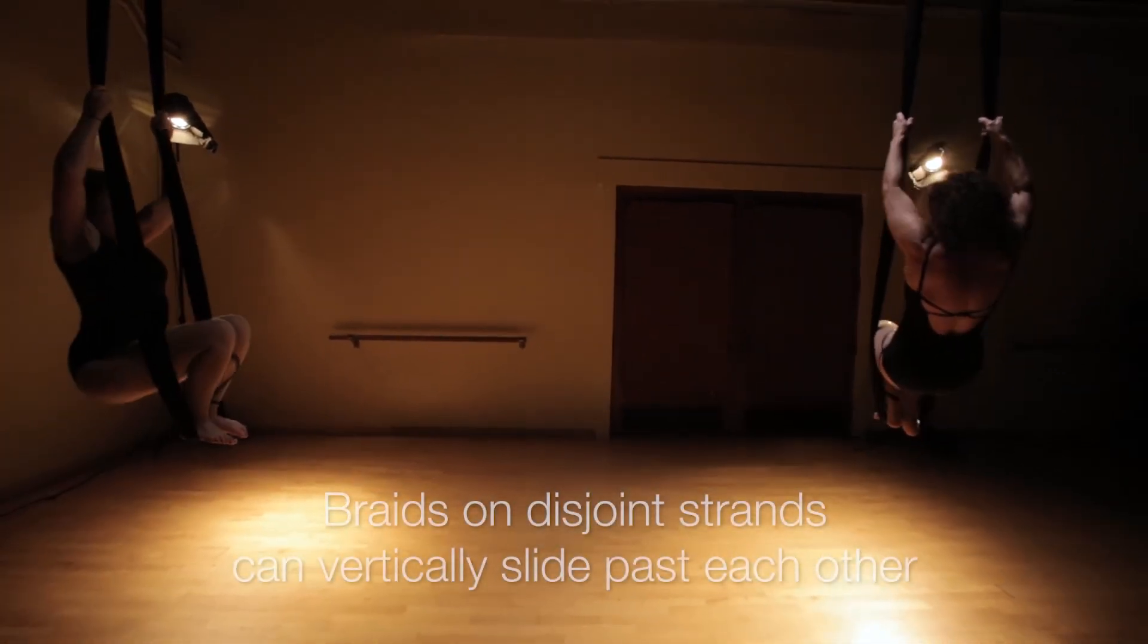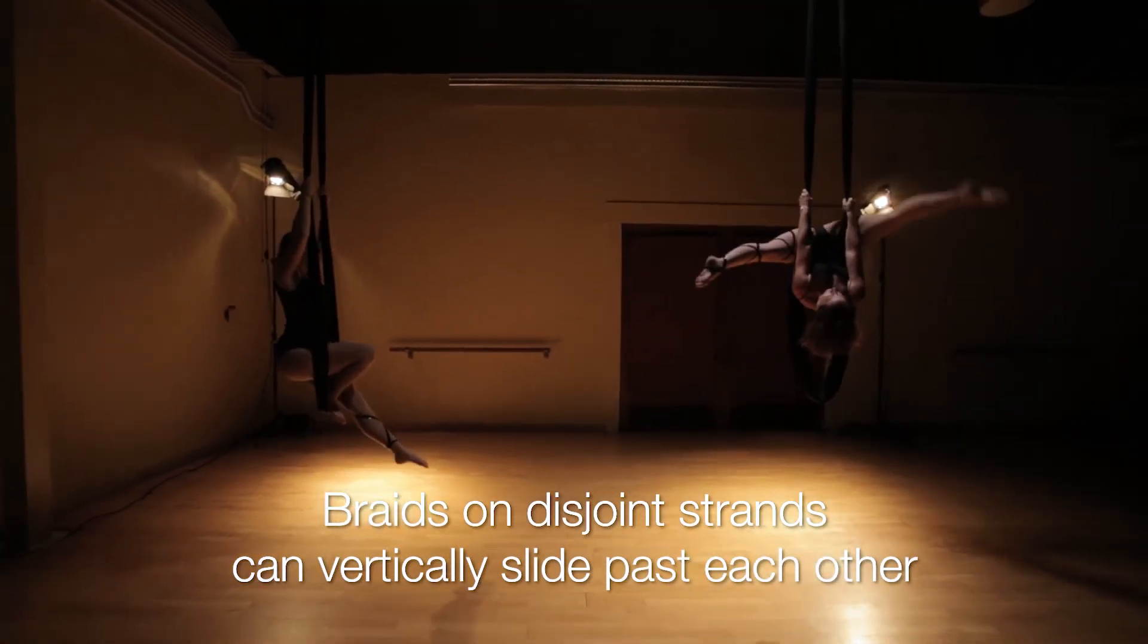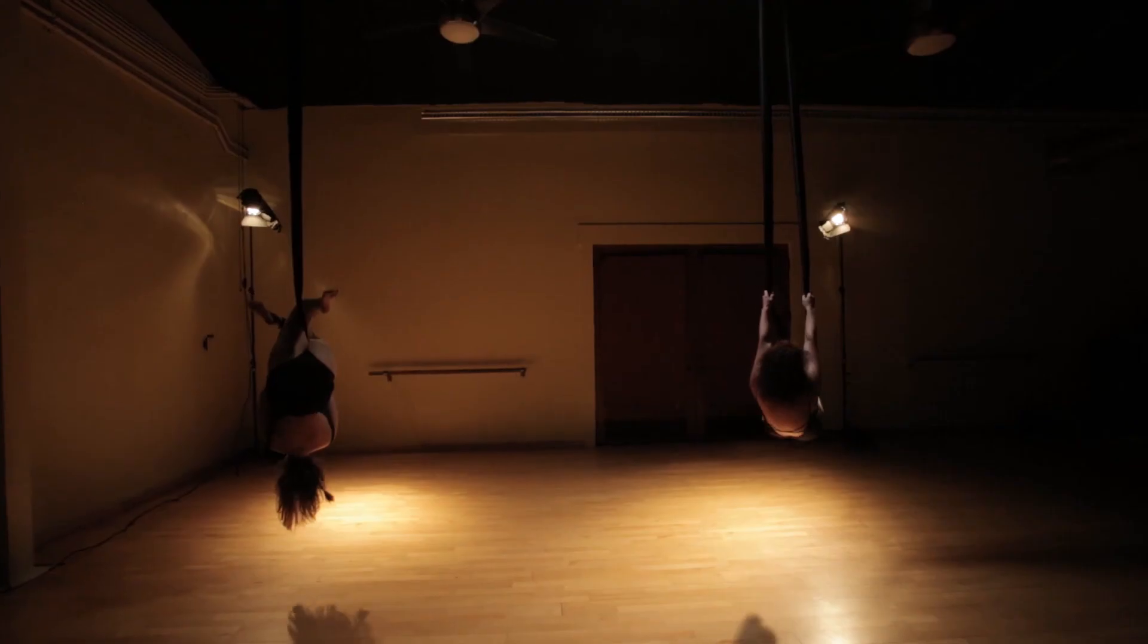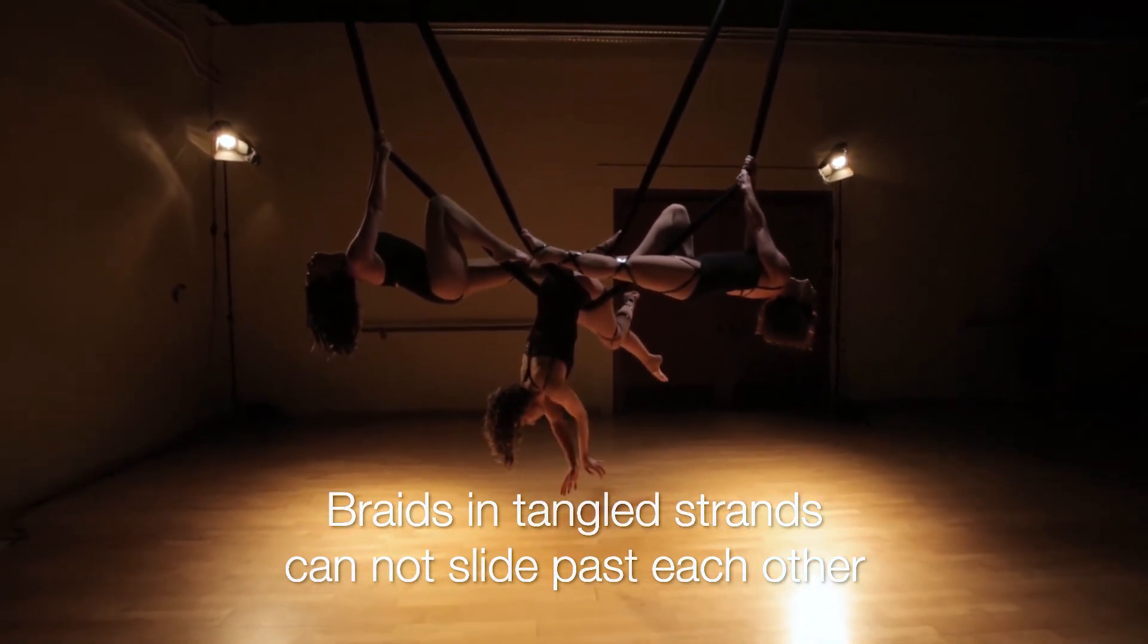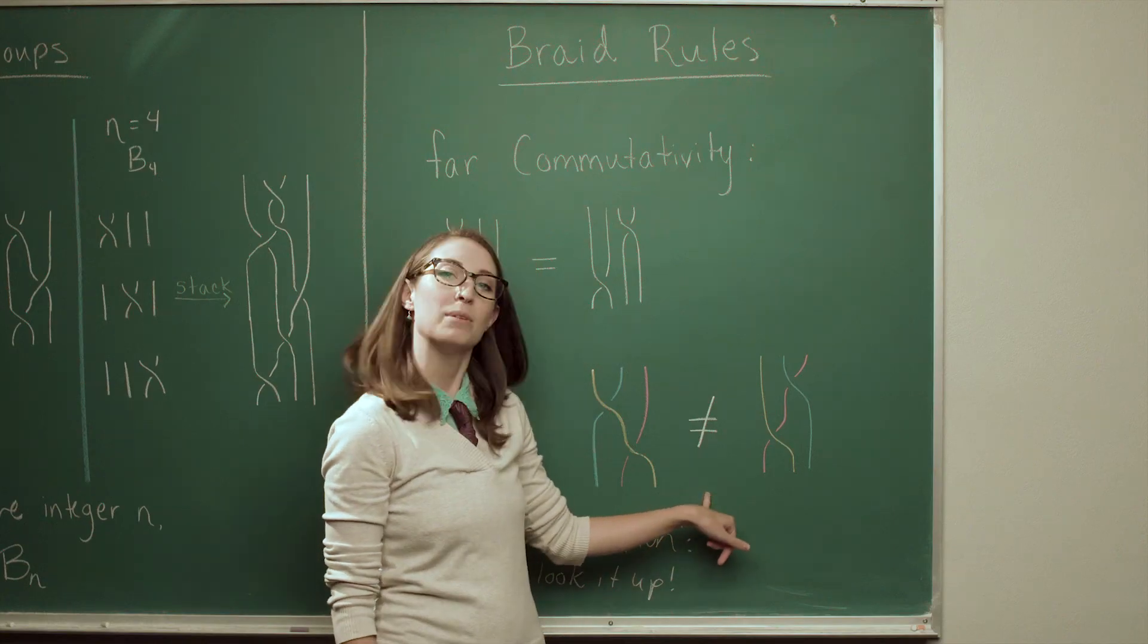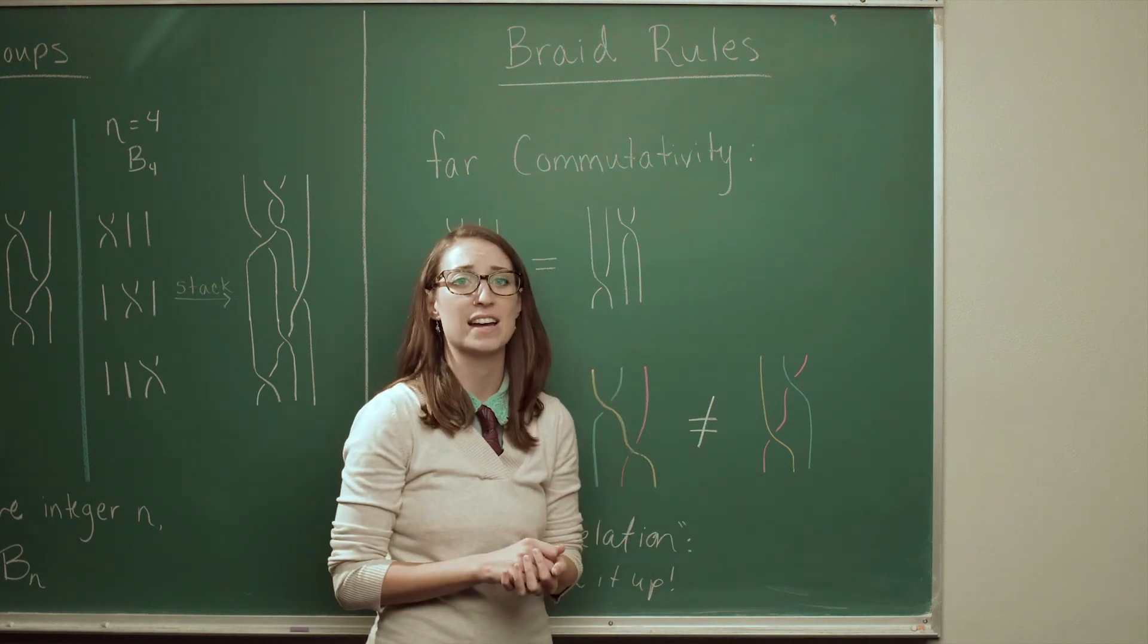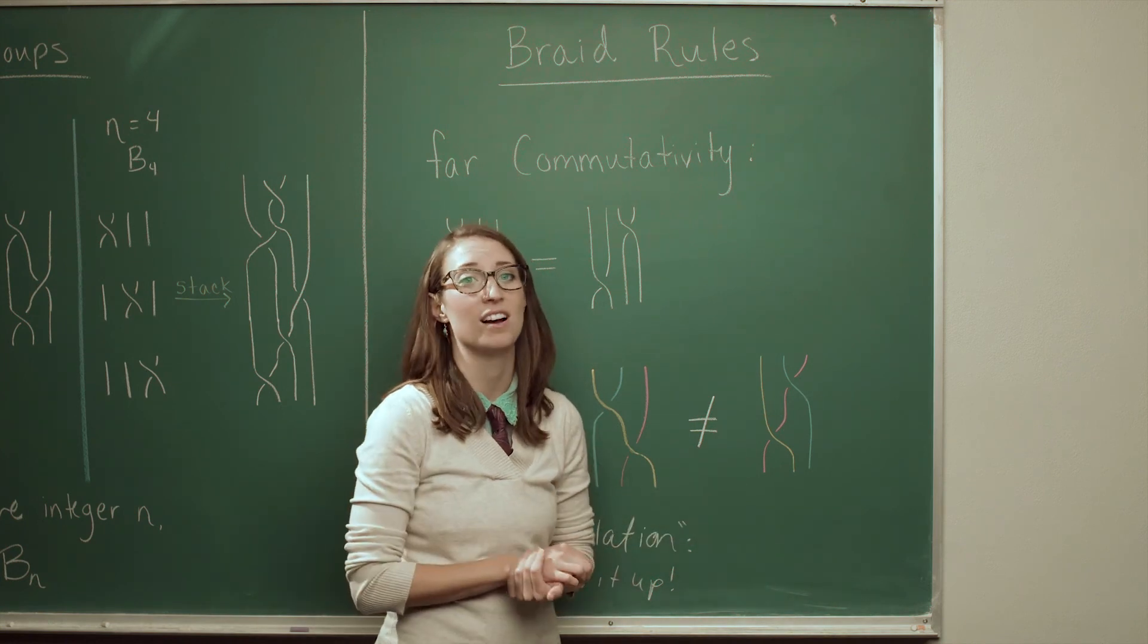So the way we showed this in the video, the first part we had was two dancers on separate silks and they glided and danced past each other because they weren't interacting. But then we had another image where there was three dancers in two silks that were all tangled up and they couldn't slide past each other. And that's what's happening here. That if the strands are tangled together, the crossings cannot slide past each other. We really do get a different braid if we were to change the order of the crossings.